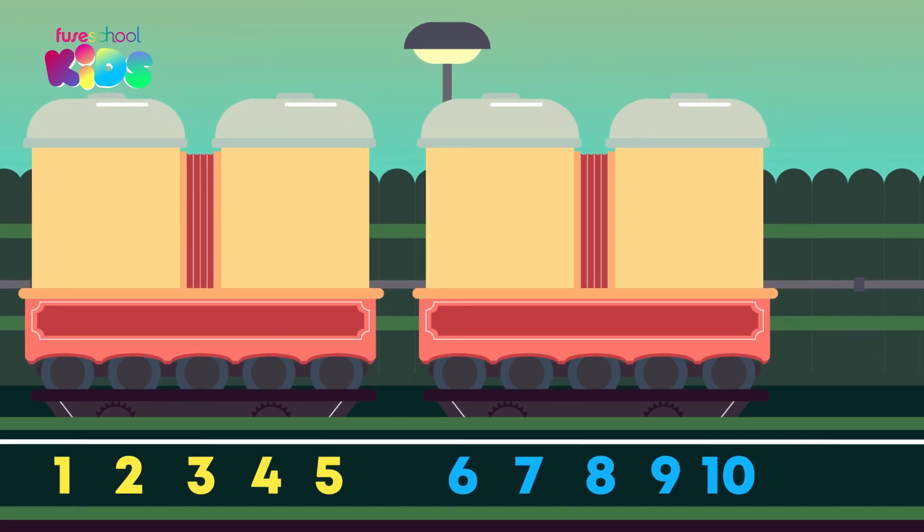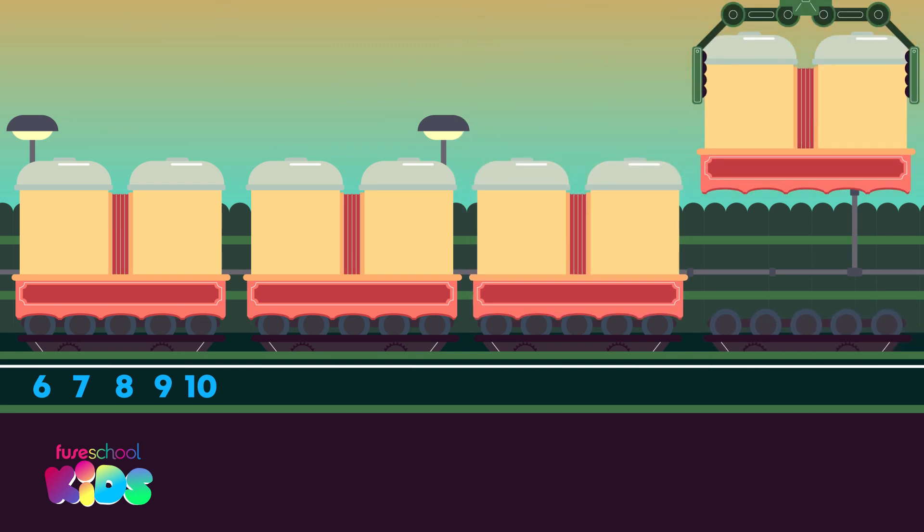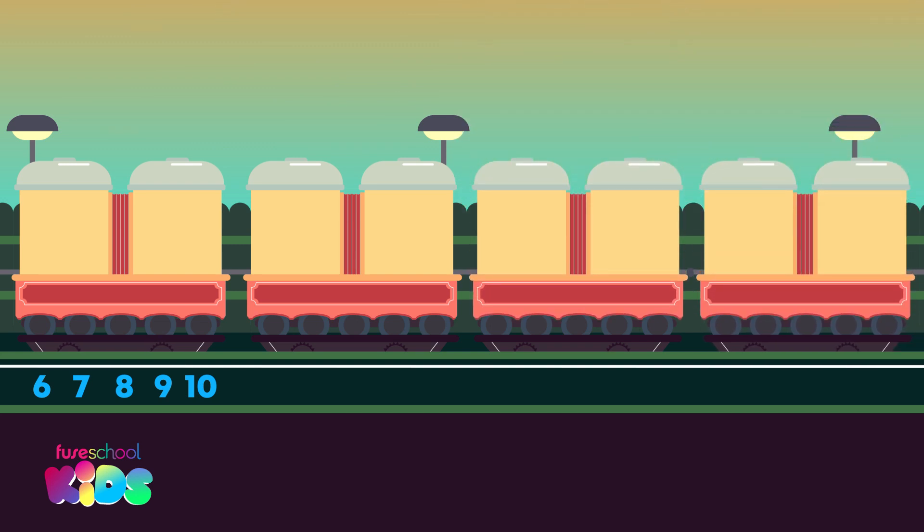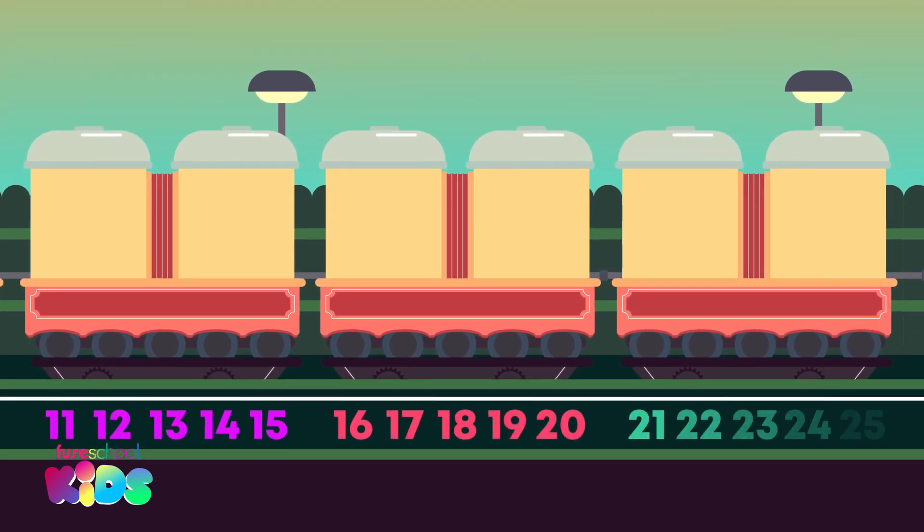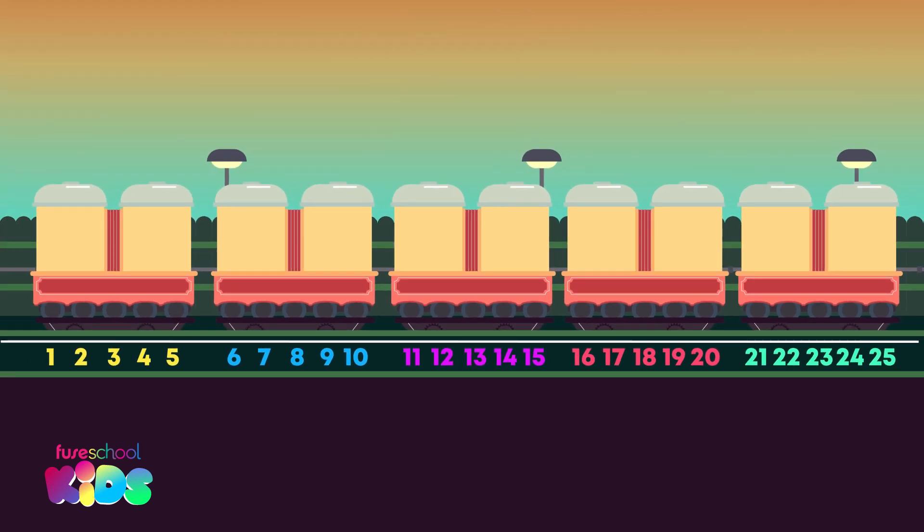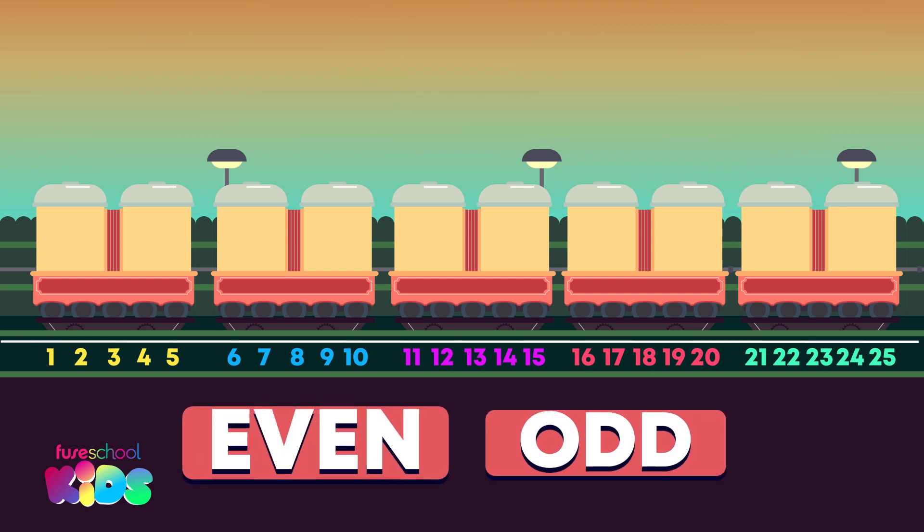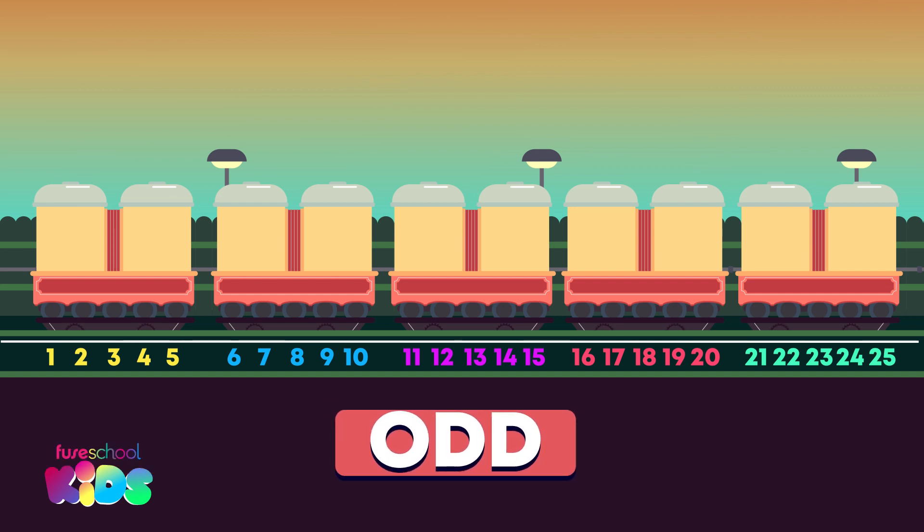The builder bots added some more wheels. To find out how many there are now, keep on counting in 5's. There are 15, 20, 25 wheels. Great work! Does the train have an odd or even number of wheels? Odd. Well done, everyone.